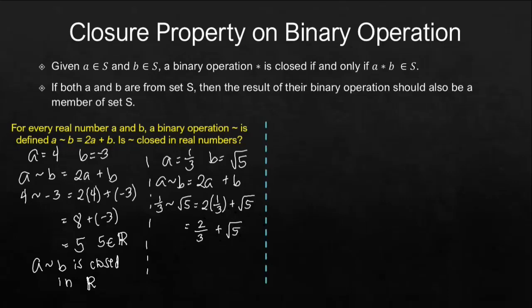And this can still be added together. Using your calculator, 2 thirds plus square root of 5 is 2.90273 and so on. So, see, even if we add a fraction and an irrational number, it will still result to a number that is under the real number system. With that being said, we can really state that A tilde B is closed in the real numbers.